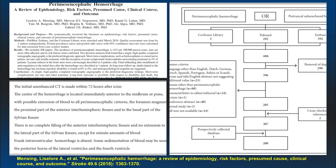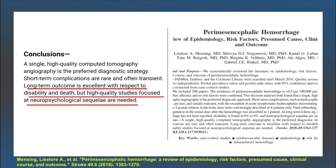There is no complete filling of the anterior inter-hemispheric fissure and no extension into the lateral part of the sylvian fissure, except for very minute amounts of blood. Frank intraventricular hemorrhage is absent. Some sedimentation of blood may be seen in the posterior horns of the lateral ventricles and the fourth ventricle. In conclusion, single high-quality CT angiography is the preferred diagnostic strategy, which negates the need for DSA if it is negative. Long-term outcome is excellent with respect to disability and death, but high-quality studies focused on neuropsychological sequelae are needed.